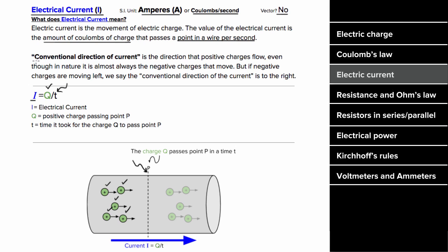Something that's kind of strange is that the so-called conventional direction of current would be the direction that positive charges flow within a wire. However, positive charges don't flow within a wire. The only charges that actually flow in a wire are negative charges. But it turns out that negative charges flowing to the left is physically the same as positive charges flowing to the right. So in most physics problems, we pretend as if it were the positive charges moving. However, it's really the electrons, which are negative, that are moving within the wire.